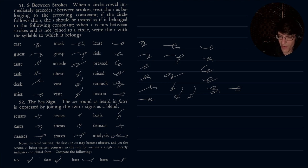So that was 51. Now 52, the S-E-S or says sign. The says sound as heard in faces is expressed by joining the two S's in a blend. So senses, for instance, has the end. So sen says, so you just do a slight curve of those two S's in opposite directions. We have cases.